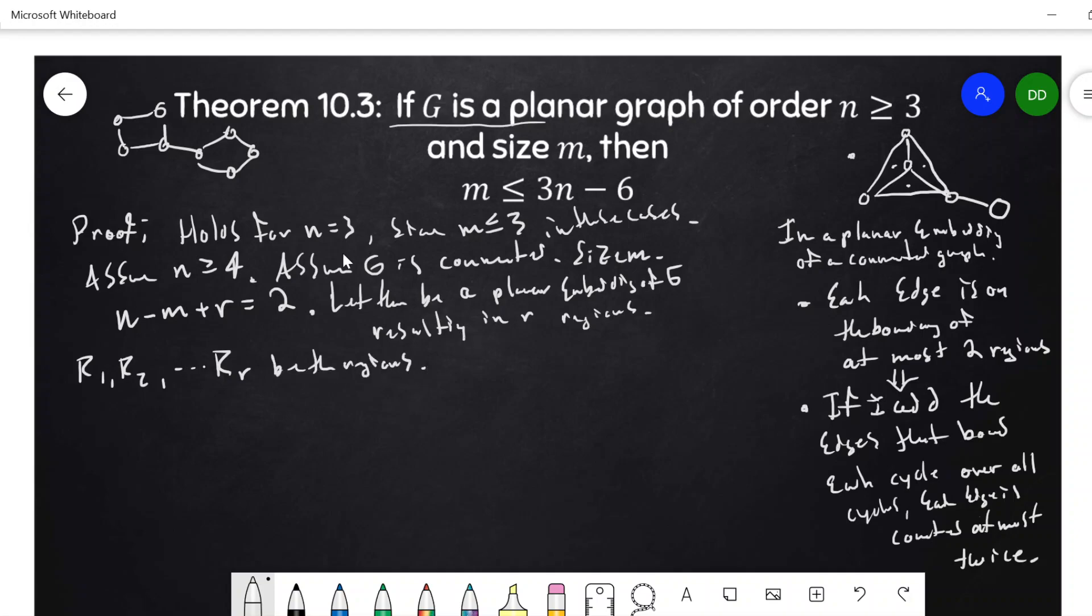And I want to keep track of how many edges bound each region. So I'm going to let little m sub i be the number of edges. So we know that since n is at least four, that the exterior region will have at least four edges. And then the boundary of any region has to be a cycle.